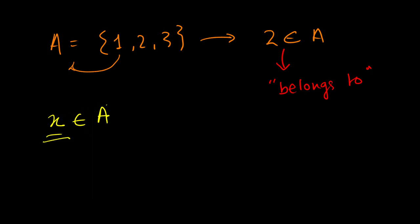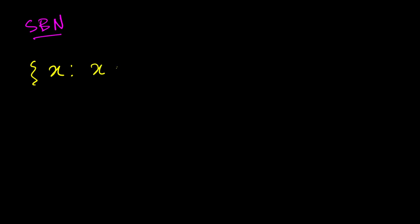Similarly, when we say x belongs to A, we mean x is an element and is a part of the set A. All the elements can be generalized by the variable x, and we use that to describe our set using set builder notation. In set builder notation, we pronounce it as: 'the set of all x such that x is...' followed by a description.